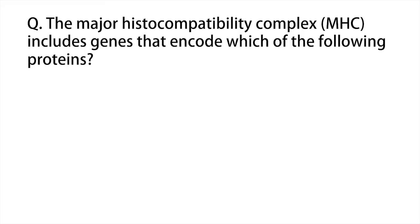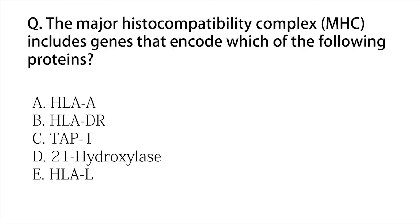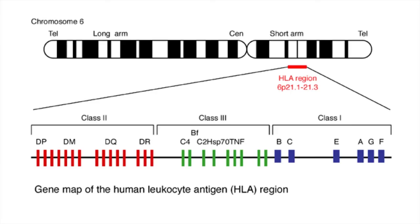Now let's look at some questions. The Major Histocompatibility Complex includes genes that encode which of the following proteins? To figure out the answer, we need to know the genes which encode MHC. First, we need to remember that in humans the MHC region occurs on chromosome number six.